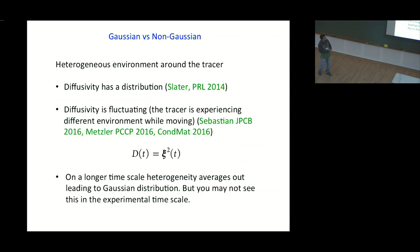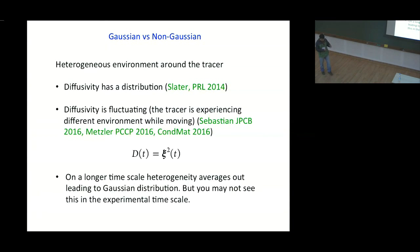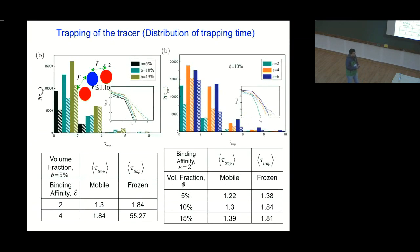To explain this, Sebastian and Metzler recently came up with a model: the diffusivity of the tracer is a random function of time. When the tracer undergoes diffusion, its diffusion coefficient changes randomly with time — this is a signature of heterogeneity in the environment. Based on this diffusing diffusivity model, it is possible to explain this kind of non-Gaussian behavior — in other words, you have a distribution of diffusivities.